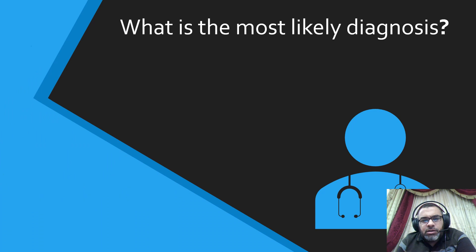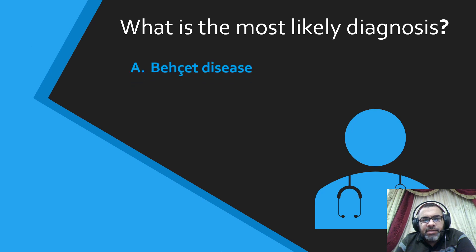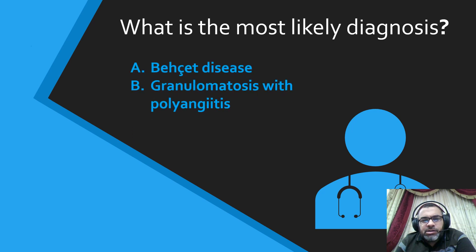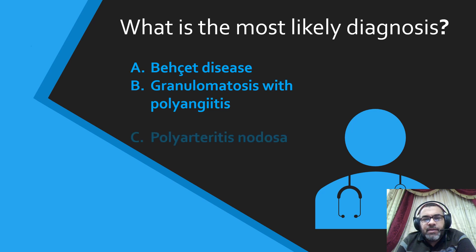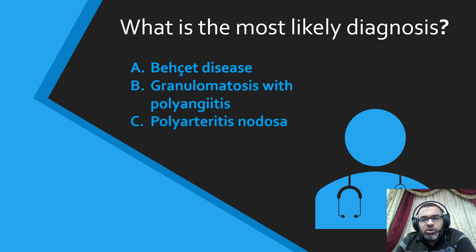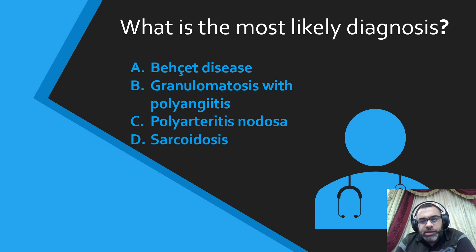So what is the most likely diagnosis? Is it Behçet's disease, granulomatosis with polyangiitis (previously known as Wegener's granulomatosis), polyarteritis nodosa, or sarcoidosis?